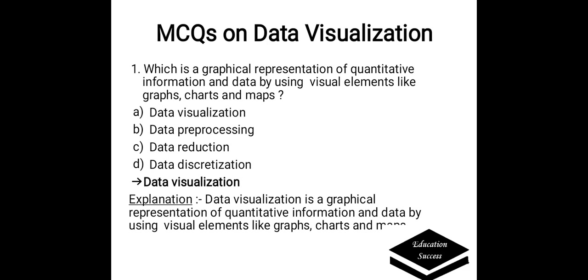charts and maps. Options are: A. Data Visualization, B. Data Pre-Processing, C. Data Reduction, D. Data Discretization. Correct answer is Data Visualization. It is a graphical representation of quantitative information and data by using visual elements like graphs, charts and maps.